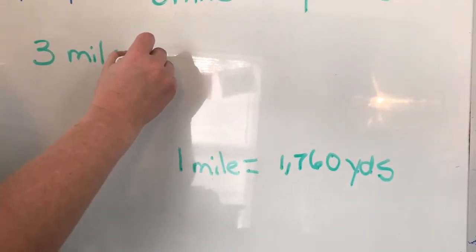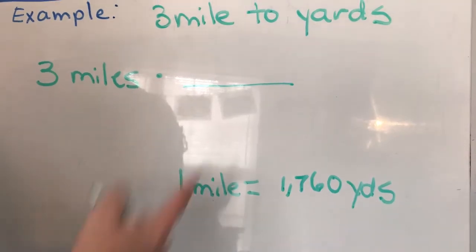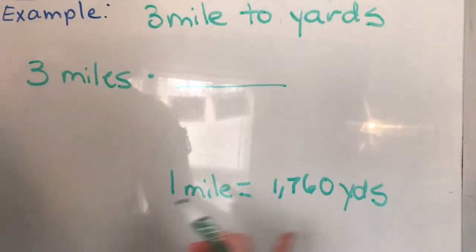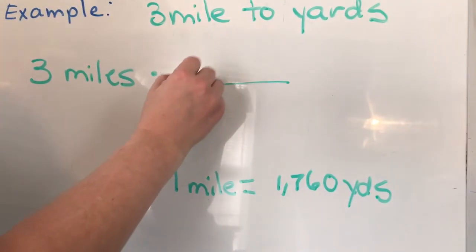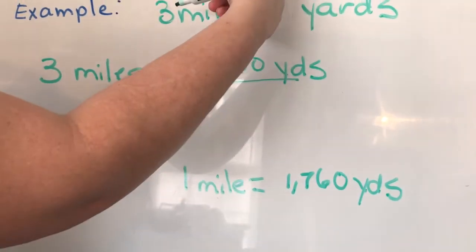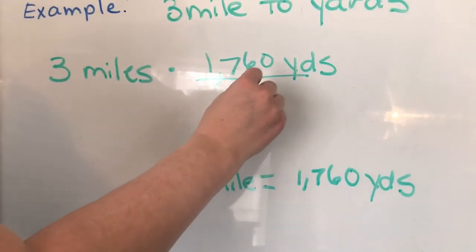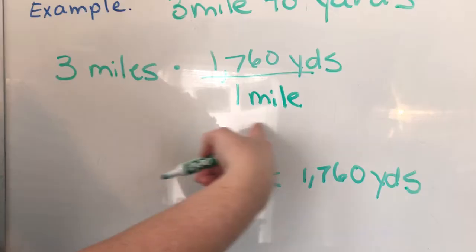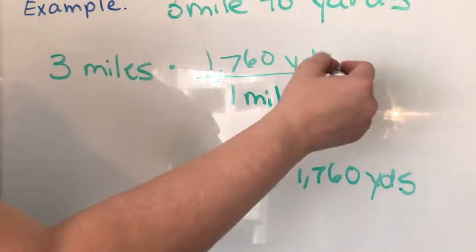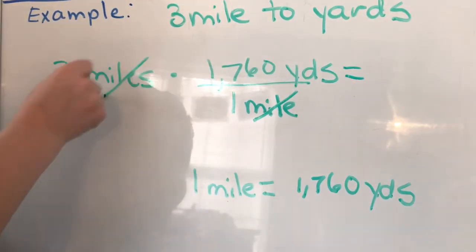And our conversion from miles to yards is 1 mile is equal to 1,760 yards. So we're going to multiply fraction bar. What we want is going to go on top. We want yards. And what we want to get rid of or what we already have is going to go on the bottom.